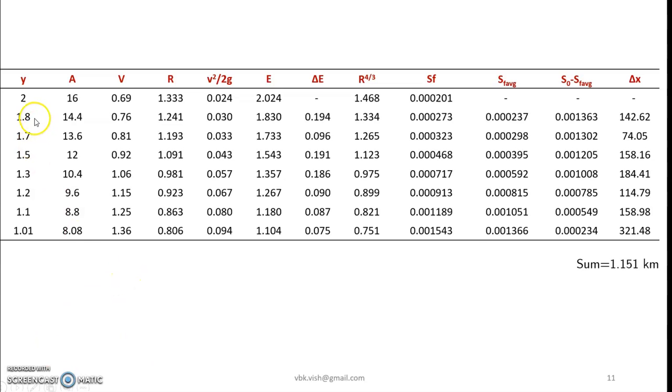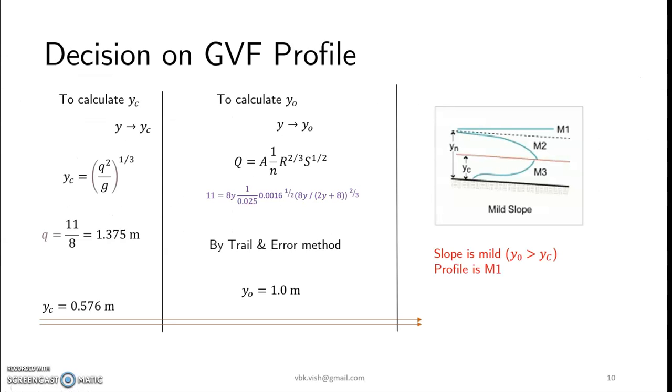So initially we try to assume the values of y from 2 meters immediately behind the upstream section of a dam which is 2 meters until 1.01 or let's say 1 meter. We could even go to the extent of y being 1 meter because the value of y0 is 1 meter.